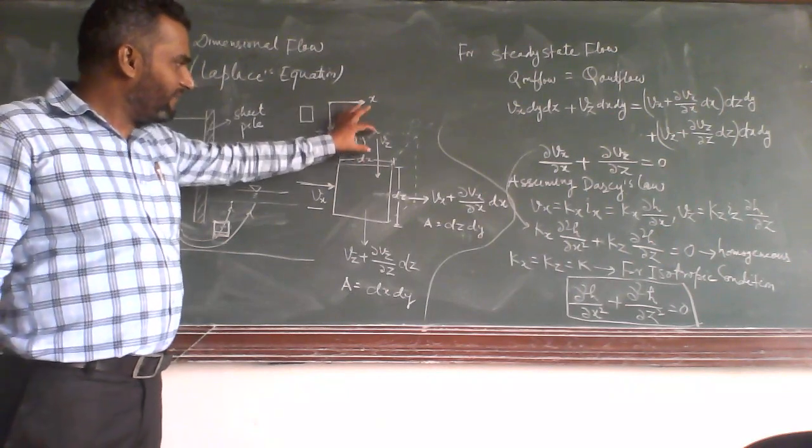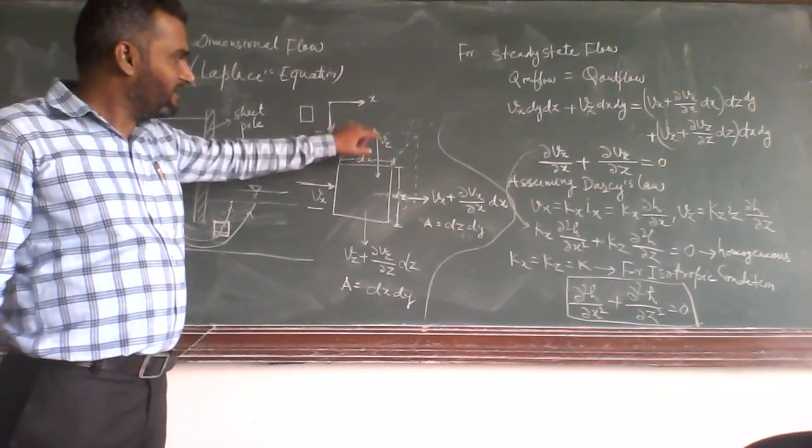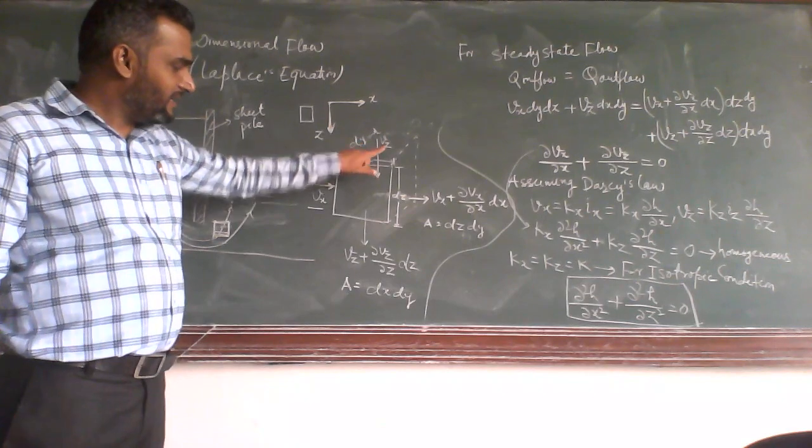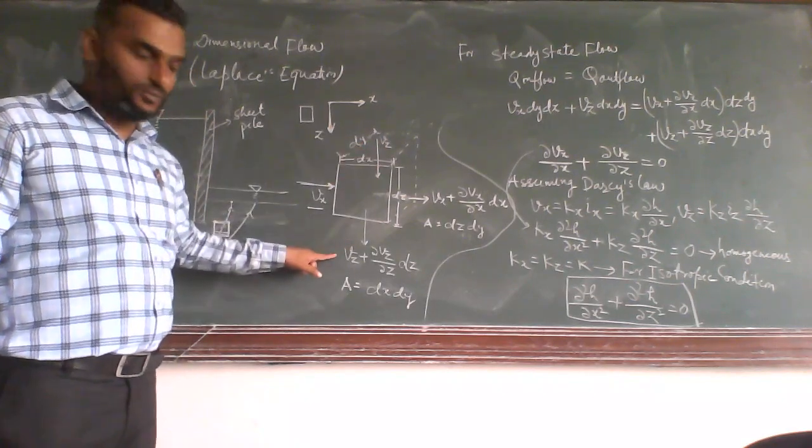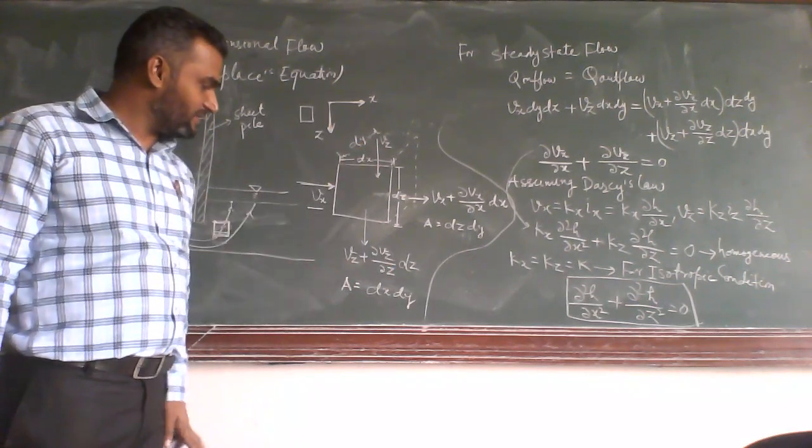In z direction, if the velocity at inlet is vz, then at the outlet point it will be vz plus dvz by dz into dz.